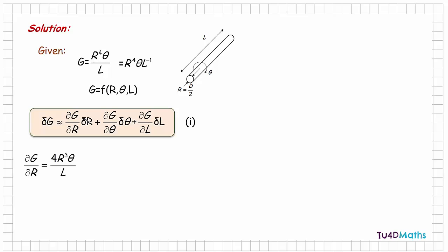If we differentiate g with respect to r, keeping l and θ constant, we just differentiate r⁴, which gives 4r³. So ∂g/∂r = 4r³θ / l. If we differentiate g with respect to θ, keeping r and l constant, we just get r⁴ / l.